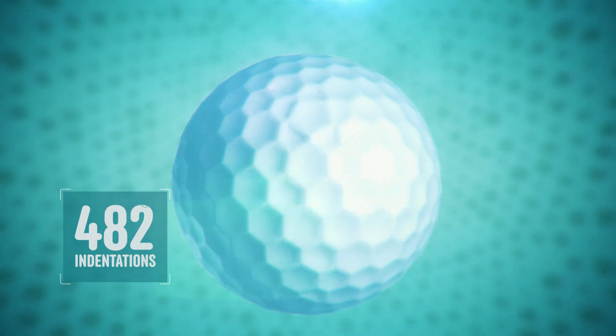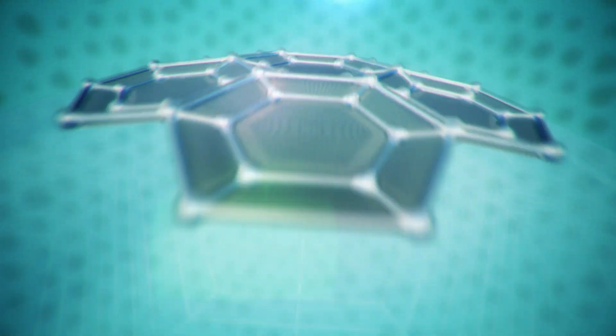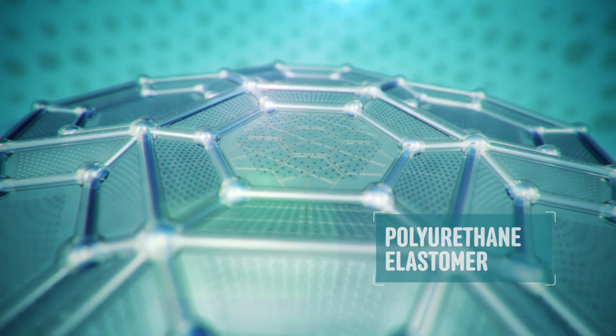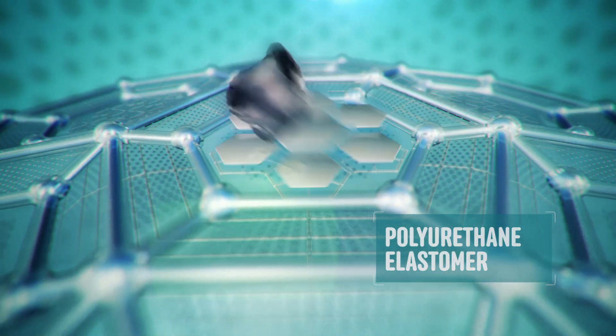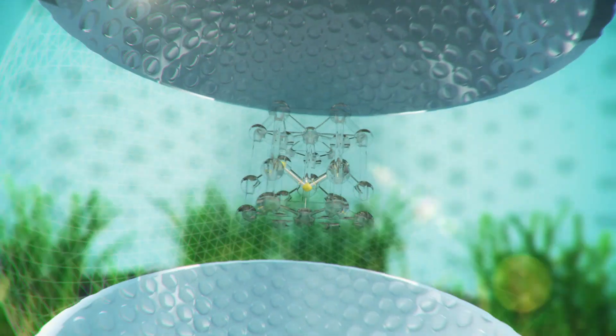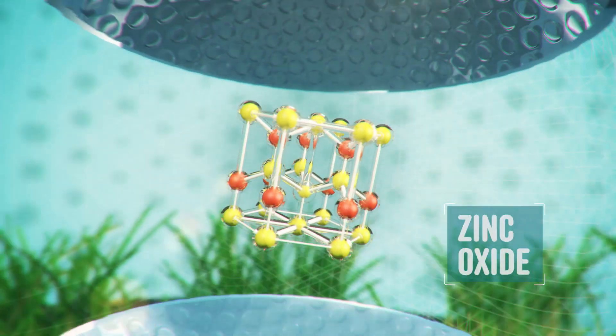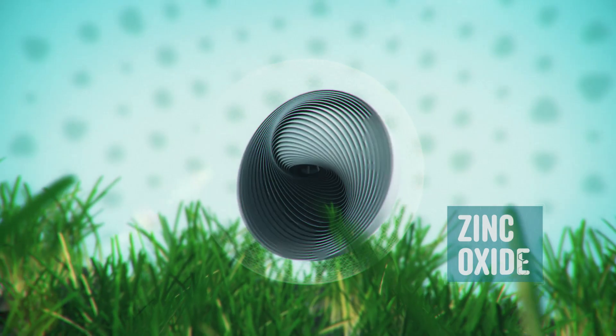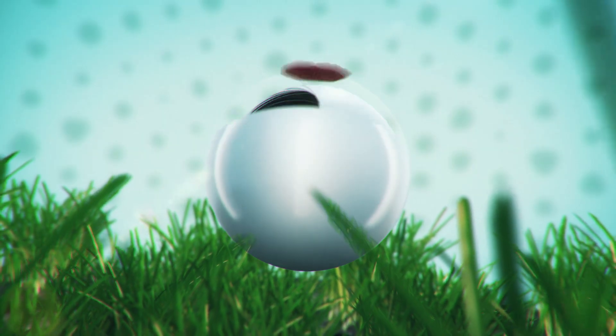A sleek aerodynamic shell of polyurethane elastomer combines flexibility with tremendous resistance to abrasion. That cratered casing is wrapped around a master's tournament of ingredients like zinc oxide, used as a filler, and polybutadiene.